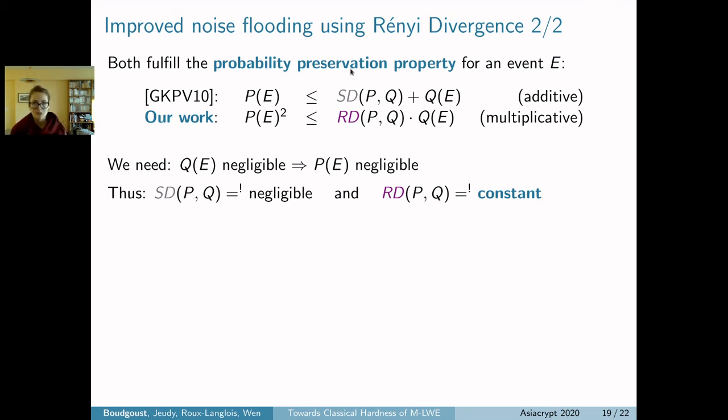There is an important difference of those two measures. Both fulfill the probability preservation property for an event E. This means the probability this event happens for distribution Q bounds above the probability it happens for distribution P. With statistical distance, it's an additive factor; in Rényi divergence, this property becomes multiplicative. If you can ensure Q(E) is negligible, you can make sure P(E) is negligible. To make this implication, you need to require the statistical distance is negligible and the Rényi divergence is constant. This is much better—constant is much easier to have than negligible.